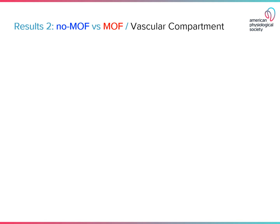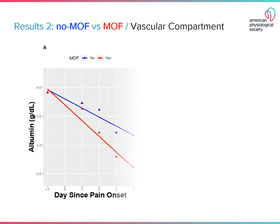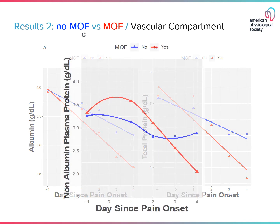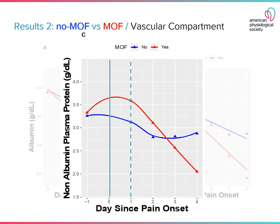The most important finding was the changes in the vascular compartment. Shown here is the change in albumin and total protein by day since the onset of pain. It is known that albumin drops in patients with multi-organ failure, but here we show that total protein also drops in patients with multi-organ failure at a rate significantly greater than in patients without multi-organ failure. What is new and important is measuring the non-albumin plasma protein. On the onset of pain and by day one, the protein actually increases in concentration.